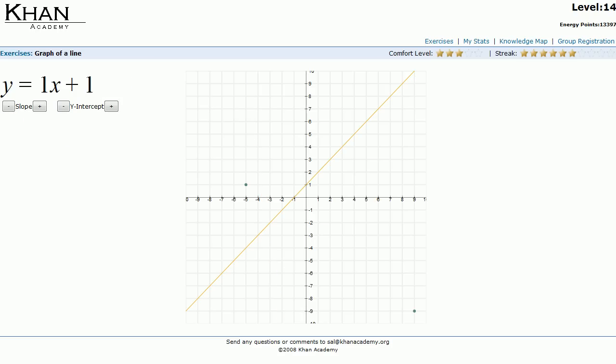Let's do another one. So once again, it resets it. So I just get the equation 1x plus 1, but it gives me these two new points that I have to make it go through. And once again, this is going to be a negative slope, right? Because for every x that I move forward positive, my y is actually going down. So I'm going to have a negative slope here. So let me lower the slope a little bit.